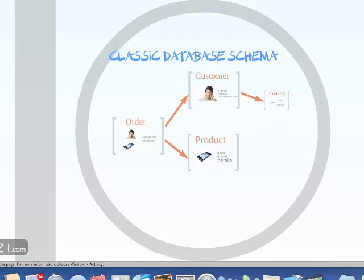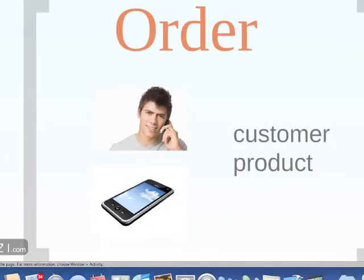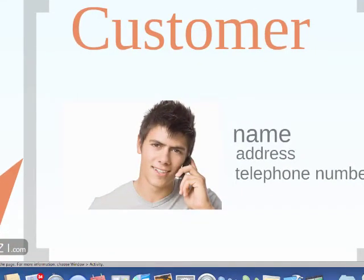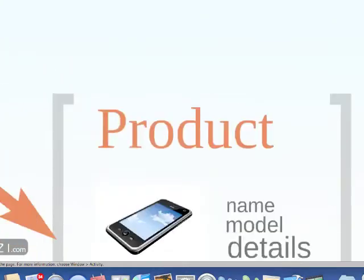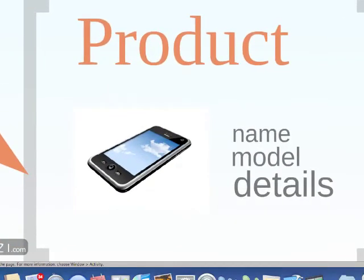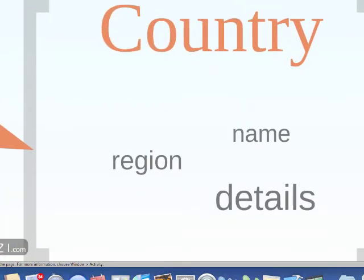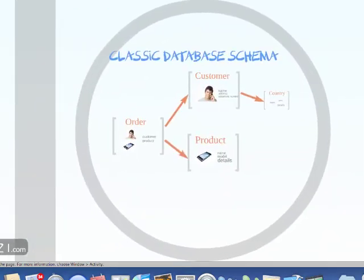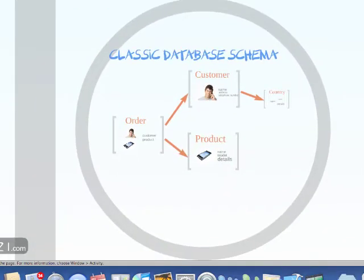For example, you would have an order table which references the customer table — this tells you which customer made the order — and then a product table which tells you what product was actually ordered. For location info, we have the country which is referenced directly from the customer table. So we have basically an ad-hoc way of objects referencing each other.